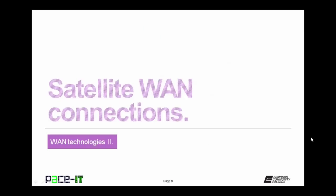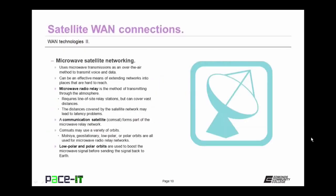It is time to conclude with satellite WAN connections. Satellite WAN connections are a type of microwave satellite networking. They use microwave transmissions as an over-the-air method of transmitting voice and data — just like WiMAX. Satellite can be an effective means of extending networks into places that are hard to reach, using microwave radio relay to transmit data through the atmosphere. Just like WiMAX, it requires line-of-sight relay stations, but it can cover even more distances. That is because it utilizes a satellite network.